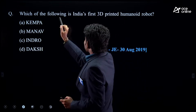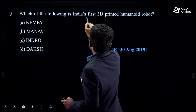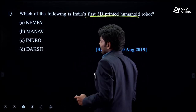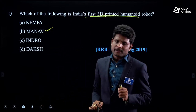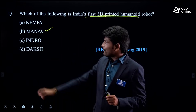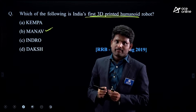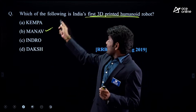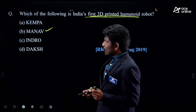Next question: 'Which of the following is India's first 3D printed humanoid robot?' Here they are focusing on 3D printed humanoid robot. The answer is MANU. But it is not enough for preparation. You need to understand whether other names are related to robotics or not, and whether the description in the question matches that robot.